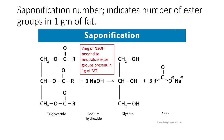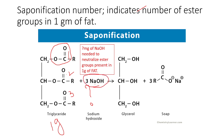The saponification number is mainly applicable to ester-bond-containing compounds. It refers to how many milligrams of sodium hydroxide (NaOH) are needed to neutralize the ester groups present in 1 gram of fat. For example, if 1 gram of fat contains 3 ester groups, then 3 NaOH molecules are needed, so the saponification number is 3.